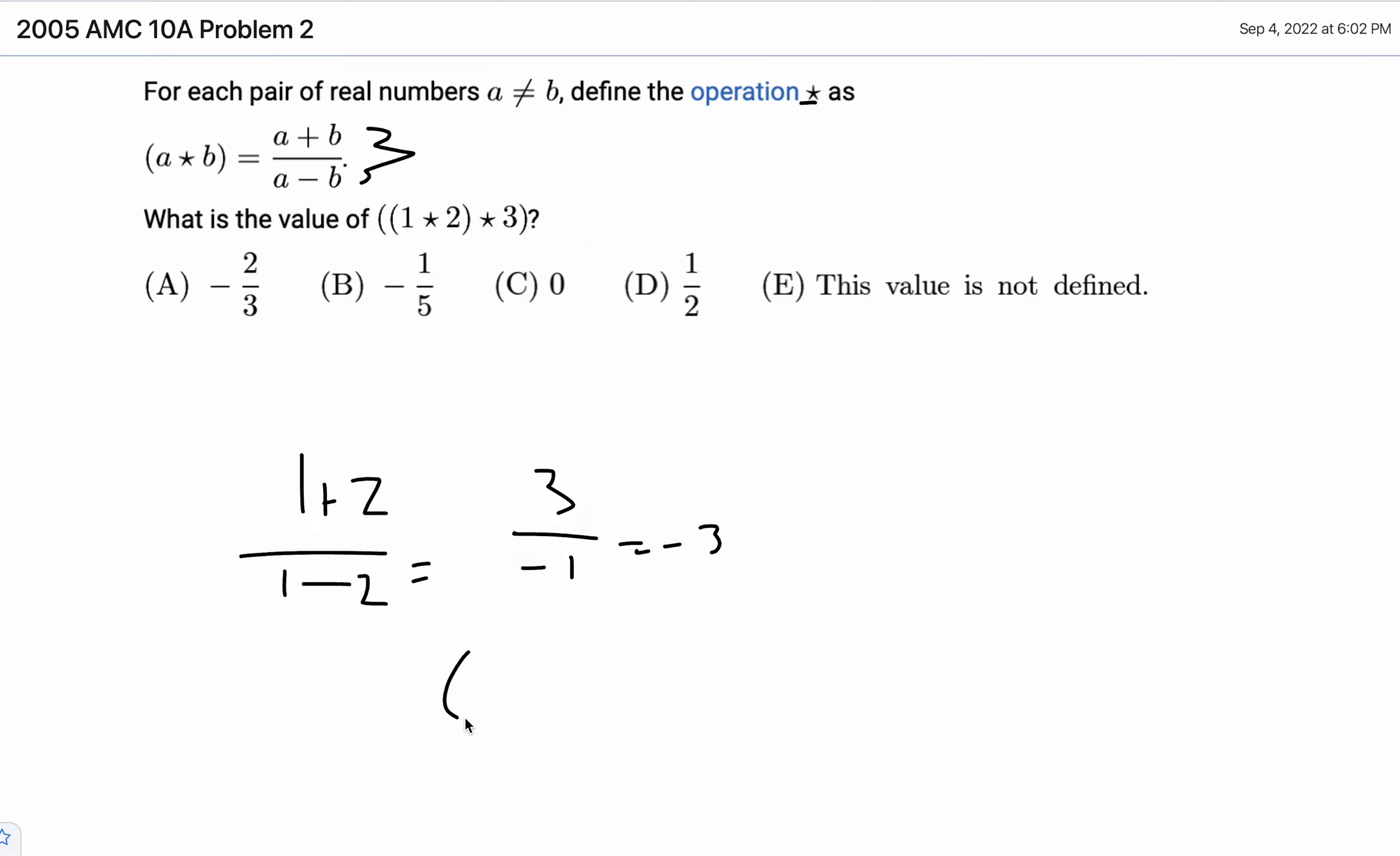And then next will be negative 3 star 3, which would just be 0 because negative 3 plus 3 is 0.